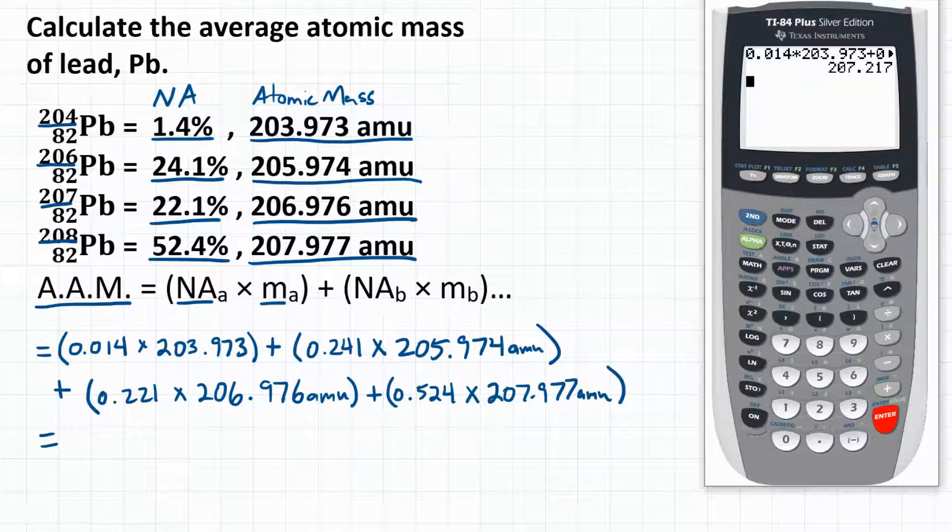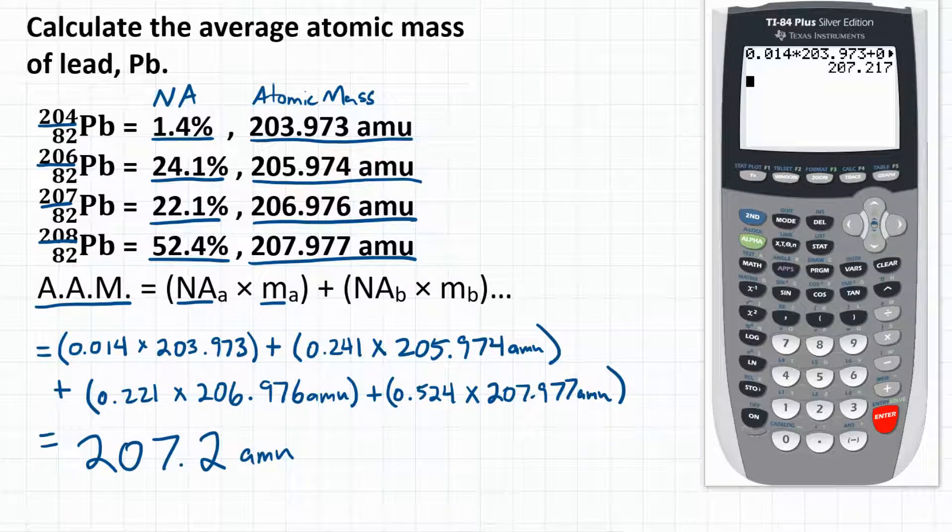Let's round that to four significant figures, and we get 207.2 AMU. So the final answer for calculating the average atomic mass of lead is 207.2 AMU.